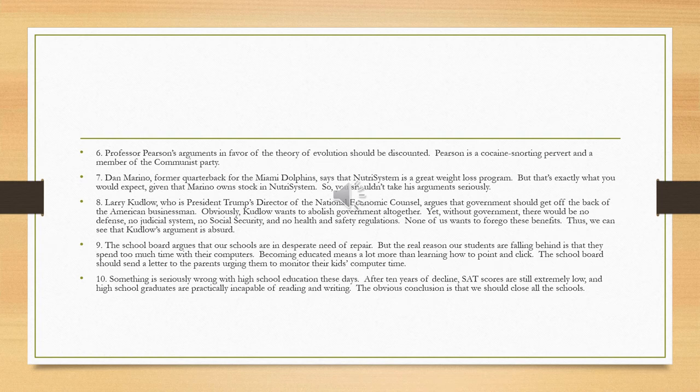In this group we have a couple of examples of argument against the person, which takes various forms. In number six we have the argument against the person abusive, where a conclusion is discounted based on the fact that the person making the argument has certain negative aspects. Basically, it insults the person making the argument. In this case, Professor Pearson's arguments against evolution are rejected because he is claimed to be a cocaine-snorting pervert and a member of the Communist Party. The argument against the person focuses on something irrelevant — the person themselves — rather than what's relevant: do the premises support the conclusion?